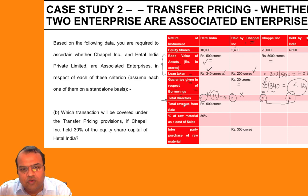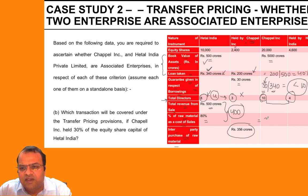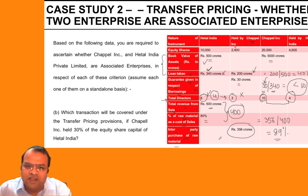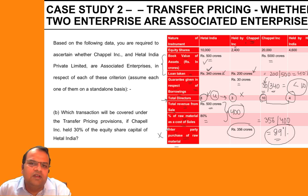The total revenue from sales of Hathal India is 500 crores. Raw material as a percentage of cost of sales is 80%, meaning raw material consumed is 400 crores. Inter-party purchase of raw material is 356 crores, so 356 divided by 400 equals 89%. The condition requires 90% or more of raw material to be purchased from the other enterprise. Since 89% is less than 90%, the two will not be related parties on this account either.